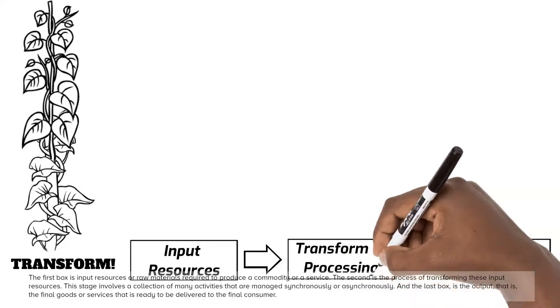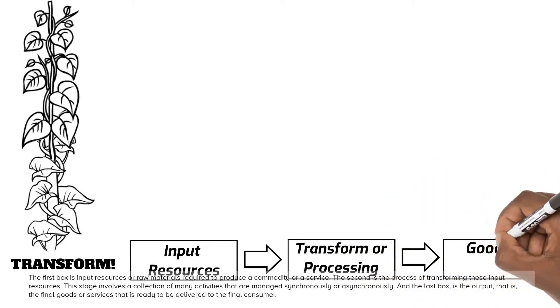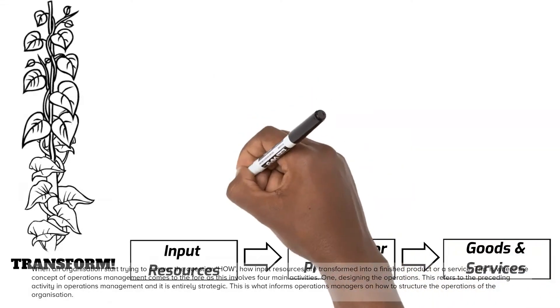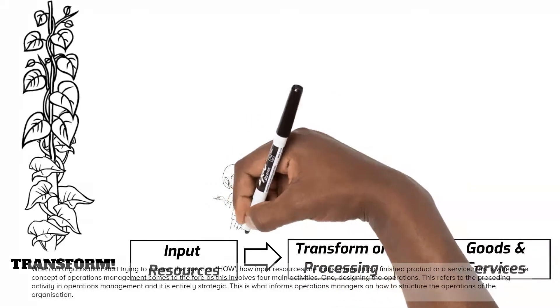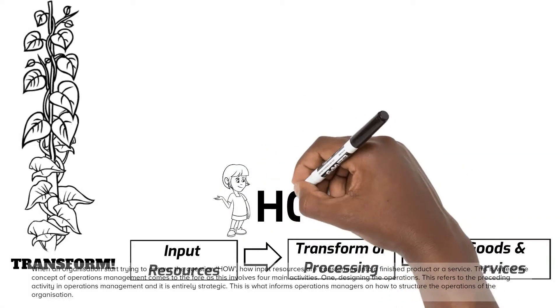And the last box is the output, that is, the final goods or services that is ready to be delivered to the final consumer. When an organization starts trying to answer the question how, how input resources are transformed into a finished product or a service.